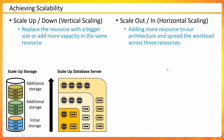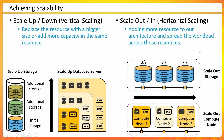Another approach is scale out/scale in, also called horizontal scaling. Here, you add more resources to your architecture and spread the workload across them. For example, when a D drive on a laptop fills up, you add an E drive, then an F drive — spreading the load. Similarly, compute nodes can be scaled out by adding more nodes to a cluster, spreading the workload across those resources.